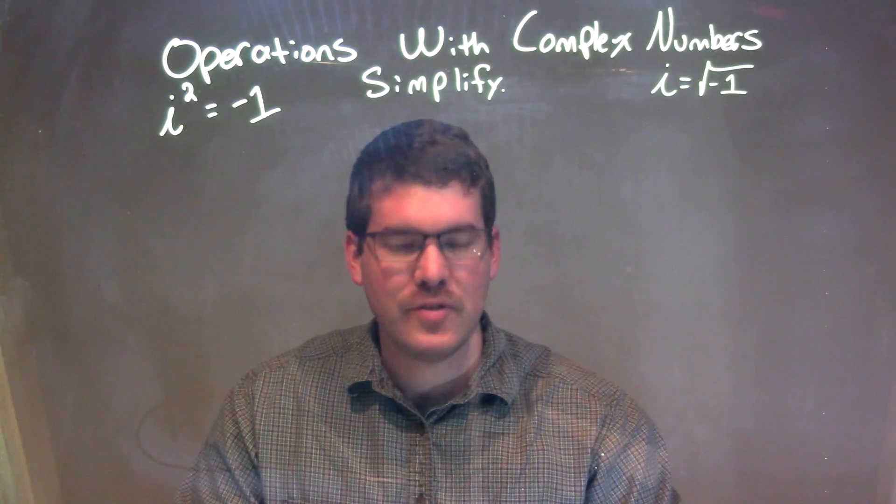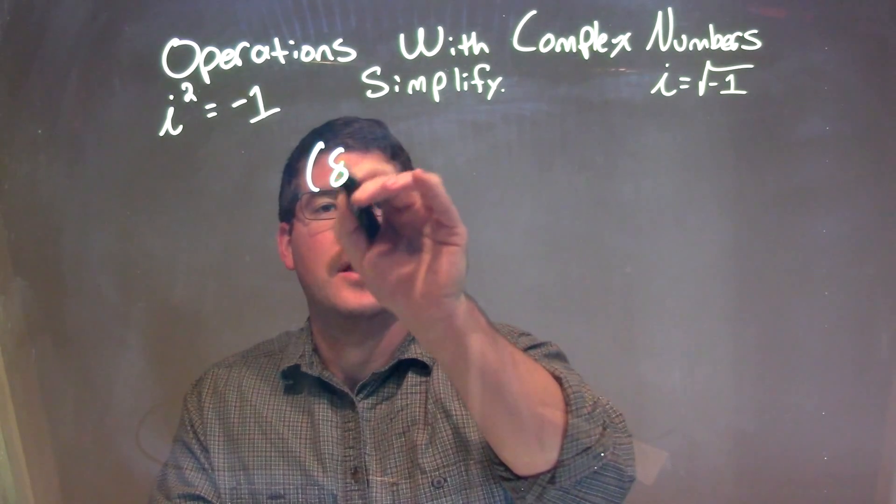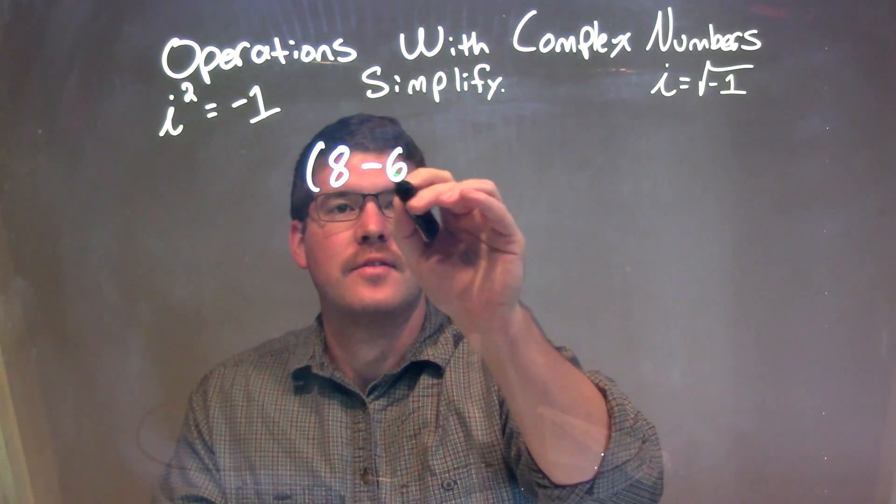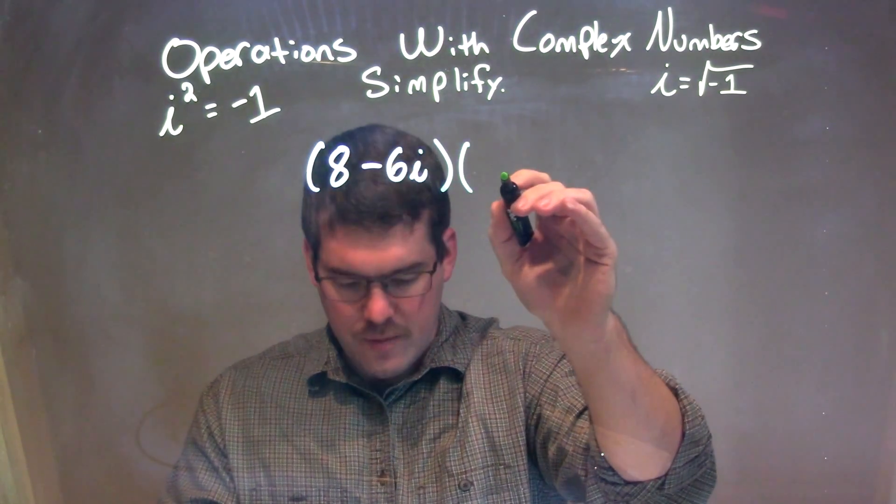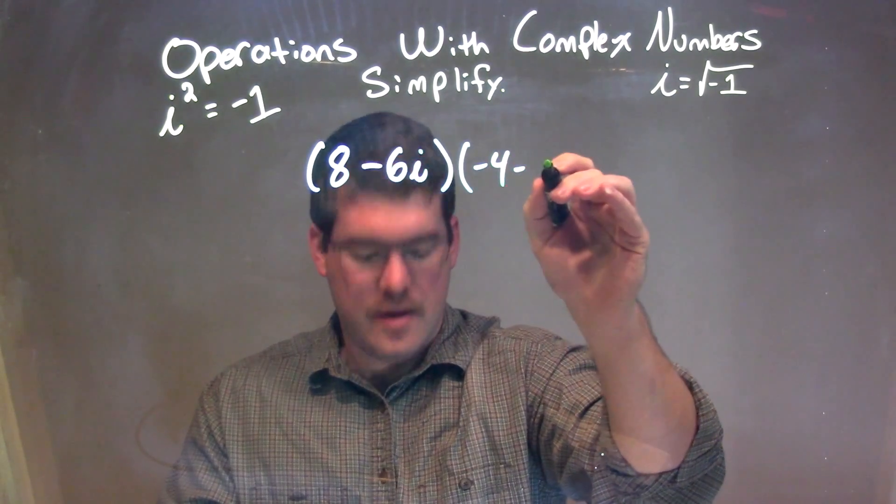So if I was given this problem: 8 minus 6i times negative 4 minus 4i.